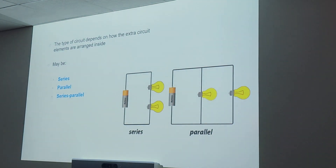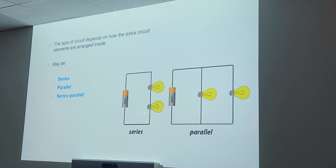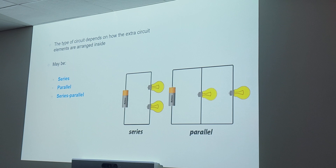Now we're going to get into different types of circuits. There are three different kinds: series, parallel, and a combination of series and parallel. Series is when current flows in order in a series — all components are one right after the other in one big loop. Parallel is when they're in different flows of current — the light bulbs are right next to each other, not one right after the other. So series is one big loop; parallel is multiple loops.